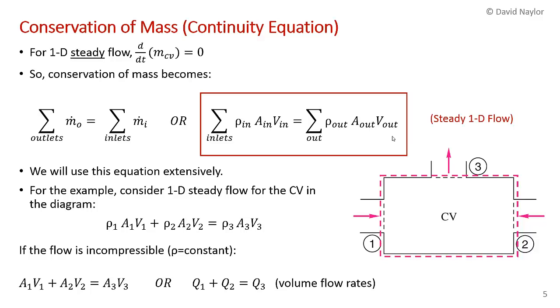If the one-dimensional flow is steady, that means nothing is changing in time. Time derivatives go to zero. The rate of change of the mass within the control volume equals zero. In that case, you set the storage term to zero and you get that the rate of mass flow out equals the rate of mass flow in. You could have any number of inlets and outlets from your control volume, so you've got to sum over the inlets and outlets. For steady one-dimensional flow, ρ_in A_in V_in summed over all inlets equals ρ_out A_out V_out summed over all outlets. We're going to use this equation extensively in the rest of the course.